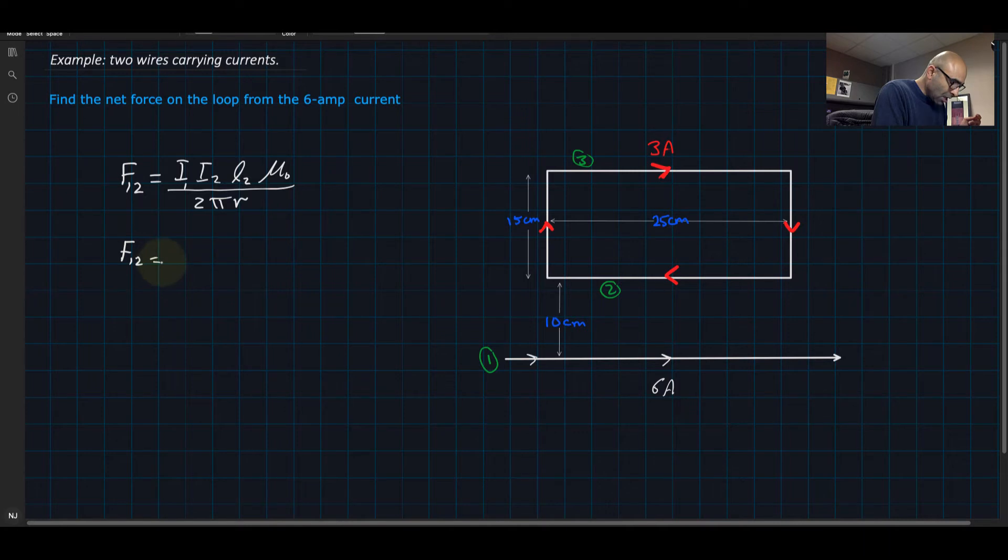F1 on 2 equals 6 for I1, I2 is 3, L2 is 25 centimeters or 0.25 meters, mu naught is 4 pi times 10 to the minus 7, divided by 2 pi times r, where the distance is 0.1 meters. Now 2 pi with 4 pi remains 2, and with quick calculations, F1 on 2 equals 9 times 10 to the minus 6 newtons.